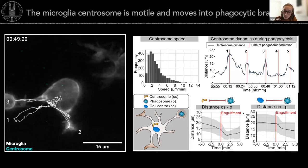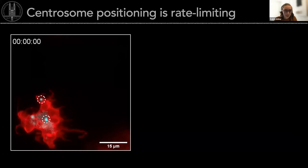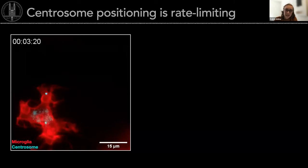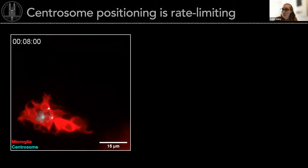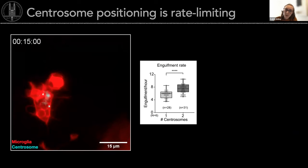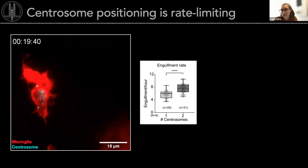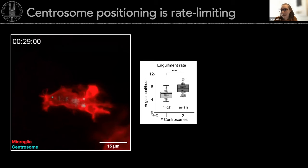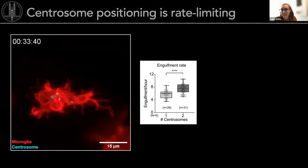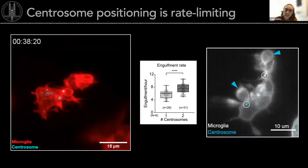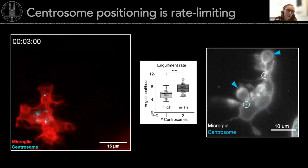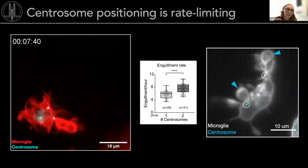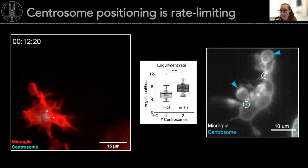To test this, I overexpressed the marker to form de novo centrosomes — basically getting two centrosomes instead of one — making the cell much more active. When I quantified the engulfment rate, they had double the engulfment rate, meaning the centrosome is most likely limiting how fast the microglia can engulf. We even found on occasion two different phagocytic events happening at the same time, which had never happened before.